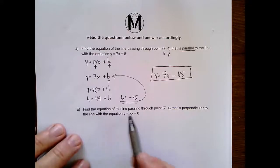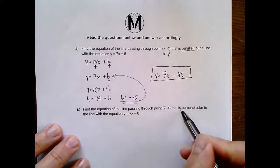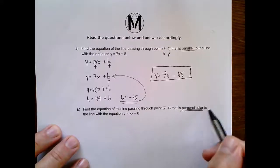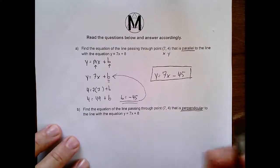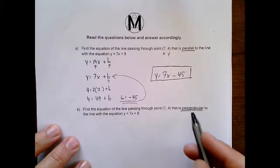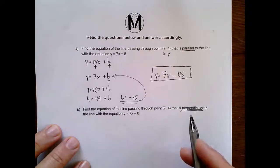It says, find the equation of the line passing through (7,4). Okay, same song and dance. Oh, but this time it is perpendicular to the line with the equation y equals 7x plus 8. Okay, so the idea here is that when a line is perpendicular...